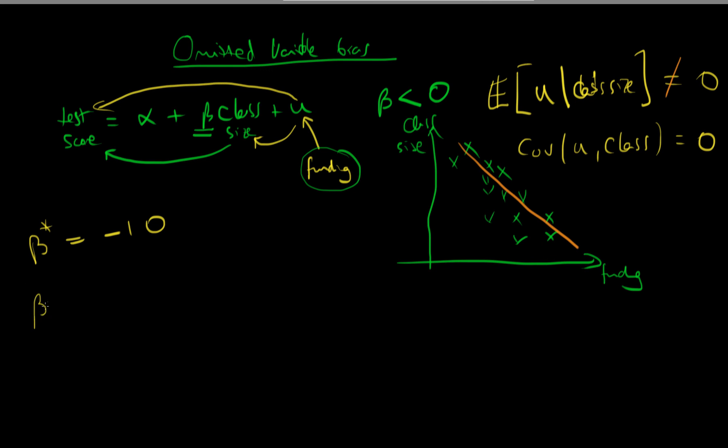So perhaps the true population parameter is only minus five, because of the fact that class size is actually doing some of the work of funding. So that means it's likely to overstate, in this case providing an estimate for beta which is lower than the true population parameter.